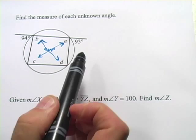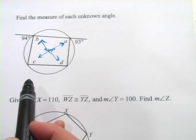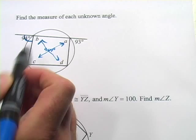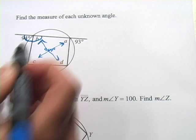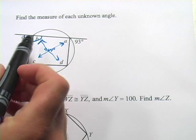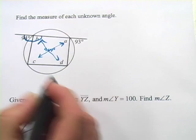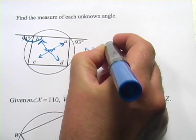In this problem, they want us to find the measure of A, B, C, and D. What they've given us is these angles out here. The first step shouldn't be too hard. This is a linear pair, so 180 minus 94, B is going to equal 86.